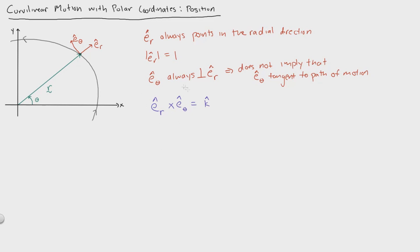Basically, if you take the cross product, that means you're rotating along that direction. If you remember this from taking moments in statics, that same idea of positive rotation is defined by this cross product. With this definition, er will always point along the path of rotation.